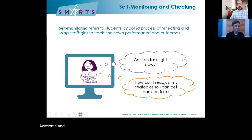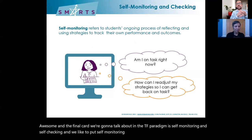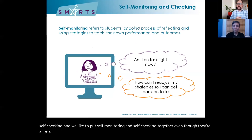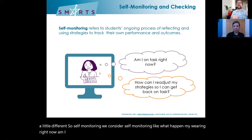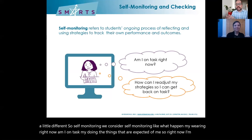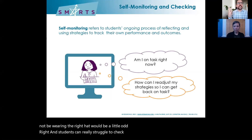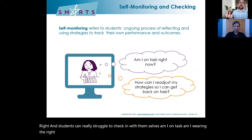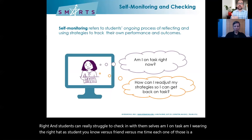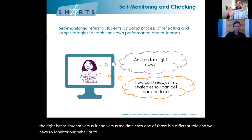The final cog in the EF paradigm is self-monitoring and self-checking. Self-monitoring is like asking: what hat am I wearing right now — am I on task, am I doing the things expected of me? Right now I'm in presenter mode — I'm being loud, using my hands. But if I was just with a friend, that would be a little odd. Students can really struggle to check in with themselves: am I on task, am I wearing the right hat as a student versus a friend versus me time? Each one is a different role, and we have to monitor our behavior.